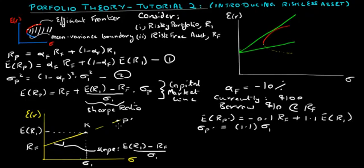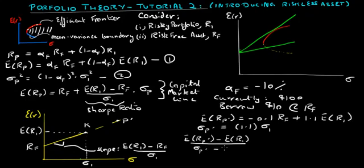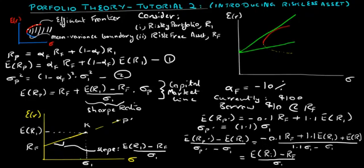The question is, what is the slope of the line that represents or extends from K to P prime? The expected return on P prime minus the expected return on the risky portfolio, divided by the volatility of P prime minus the volatility of the risky portfolio, just equals the excess return on the risky portfolio over and above the risk-free rate divided by the volatility of the risky portfolio. This is equal to the Sharpe ratio of the line extended from RF to K. Therefore, this algebraic analysis proves that it's a straight line generated when borrowing at the risk-free rate and investing in the risky portfolio. Both risk and return are going up in the portfolio.